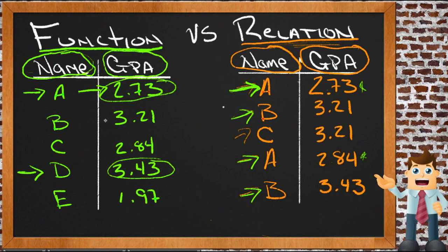If it's not a function, if it's just a relation, I can't trust it. I don't know whether if I put in student whose last name starts with A whether I'm going to get 2.73 or 2.84.